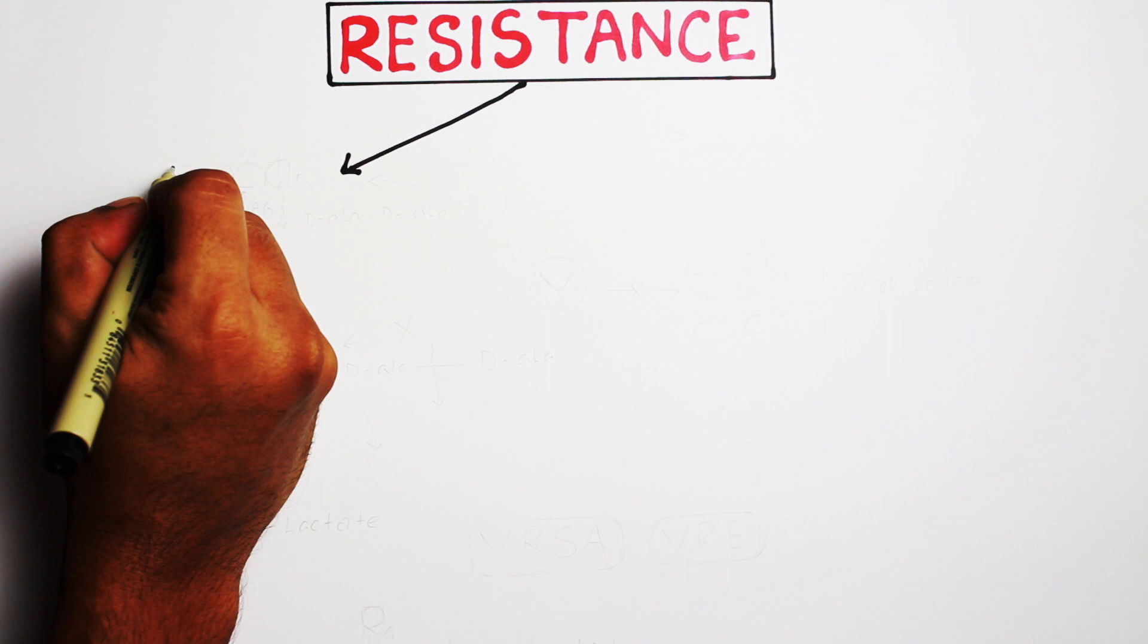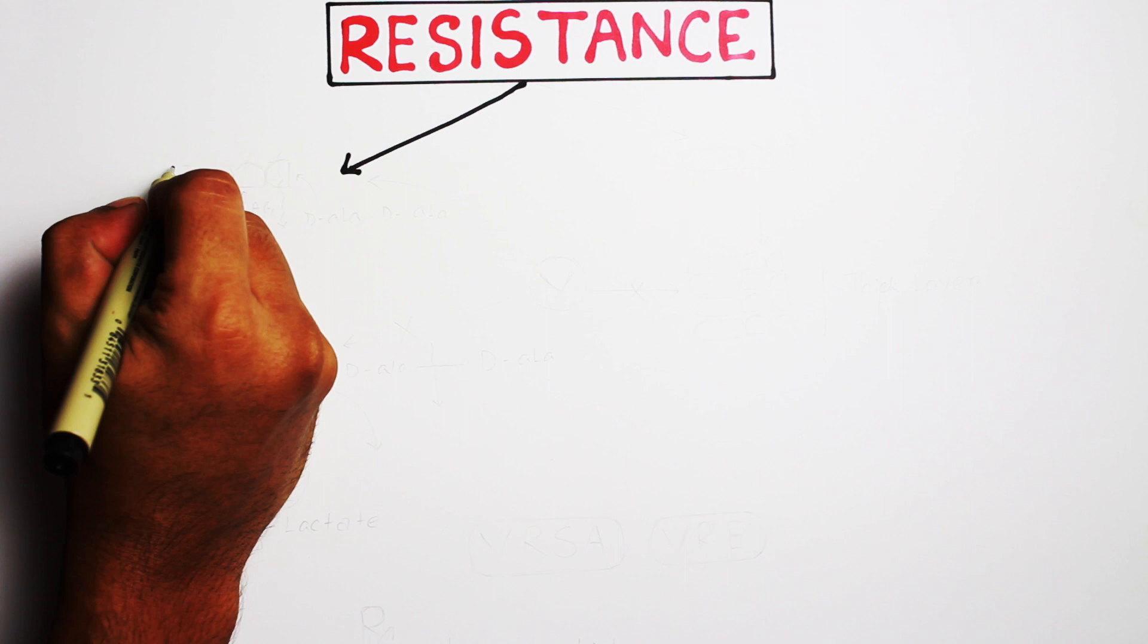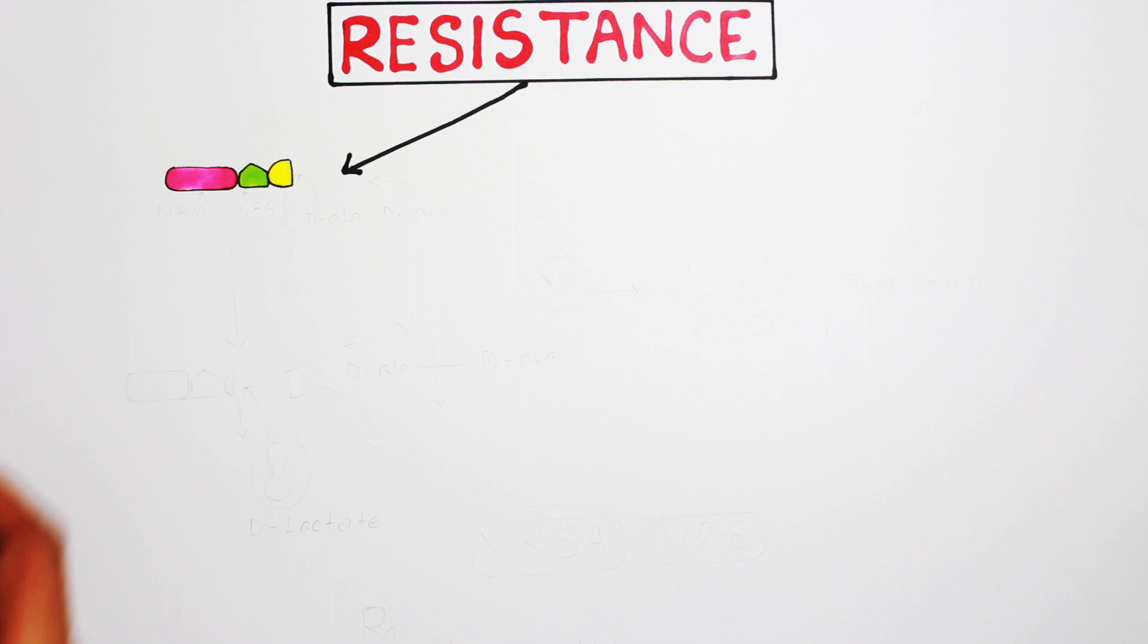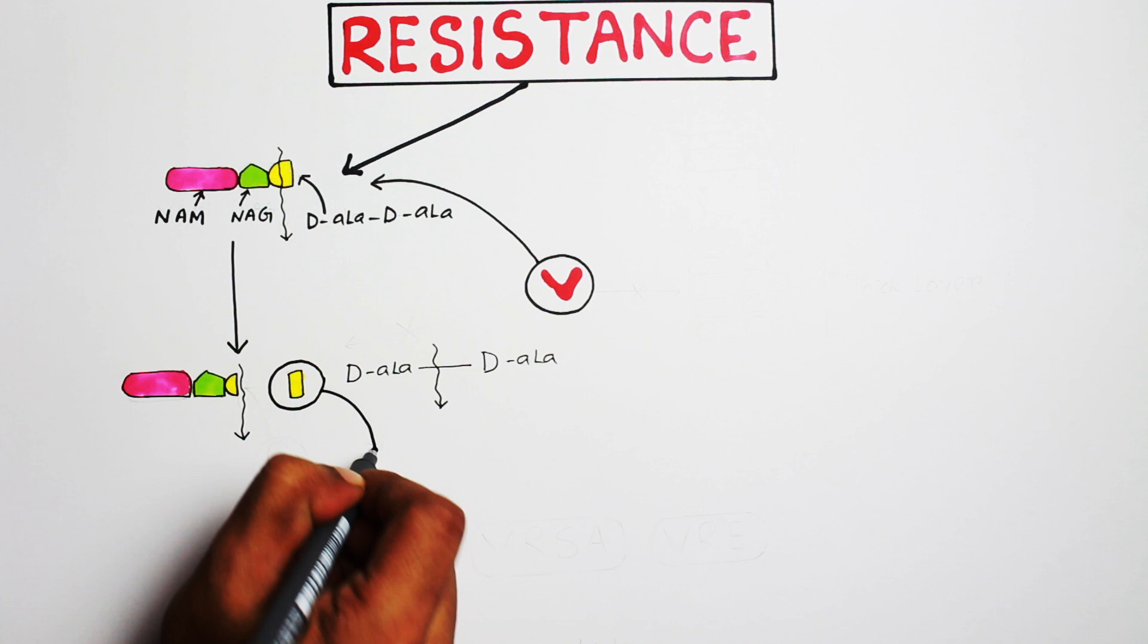Now a few words about vancomycin resistance. Here is the NAM-NAG unit with the D-ala-D-ala side chain. As I have already mentioned, vancomycin has affinity with this D-ala-D-ala portion. Now if we clip this terminal D-ala portion and replace it with D-lactate molecule, what will happen? Vancomycin will not be able to bind with that terminal portion.